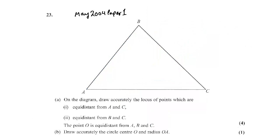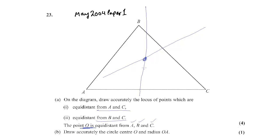The next question is to draw accurately the circle with center O, where O is equidistant from A, B, and C. Remember this rule of thumb: when you have two loci drawn, the point you are looking for is usually the point of intersection of those two loci. We drew the perpendicular bisector of AC and the perpendicular bisector of BC, so center O is their intersection.